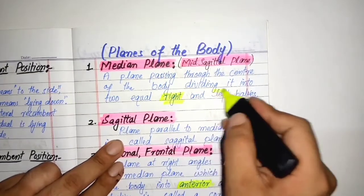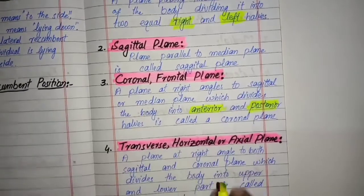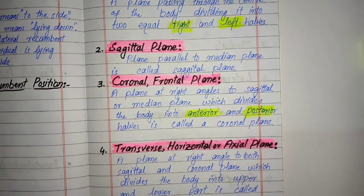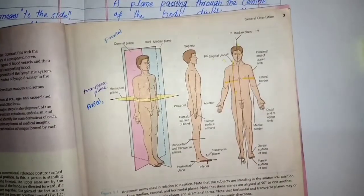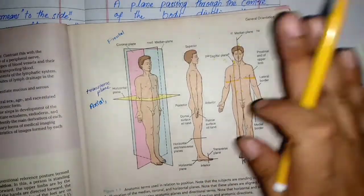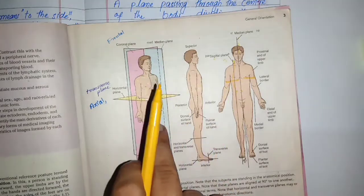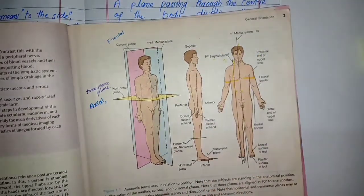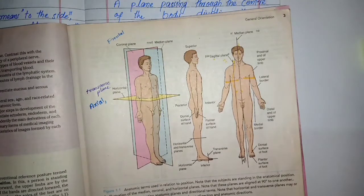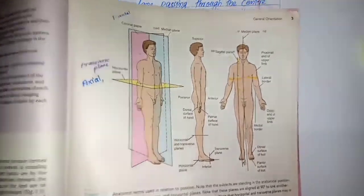I'm going to highlight these so it will be very easy for you. The coronal or frontal plane divides the body into anterior and posterior halves. Here in this book, the red plane is the one that goes from right side to left side and divides the body into anterior and posterior parts. Anterior is the front of the trunk and posterior is the back of the trunk. I will explain all these terms in the upcoming video, but for now just remember that this plane is also called the frontal plane.